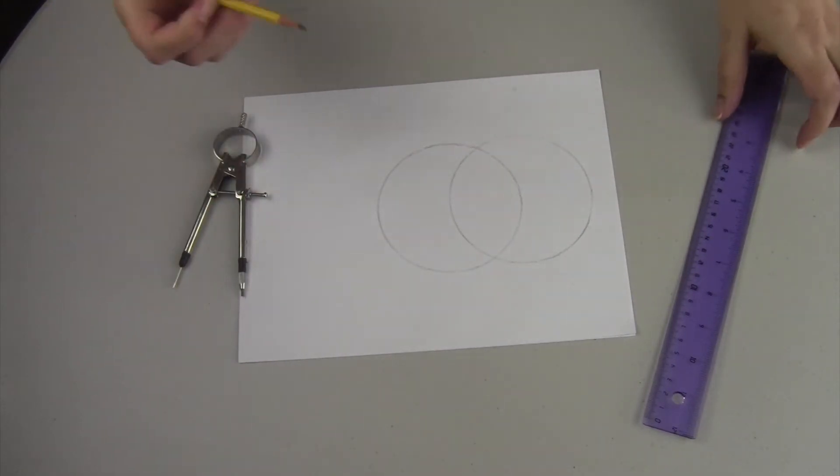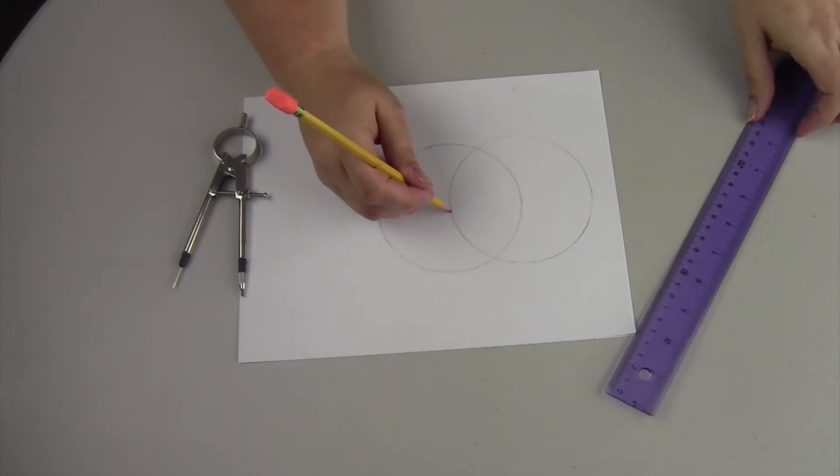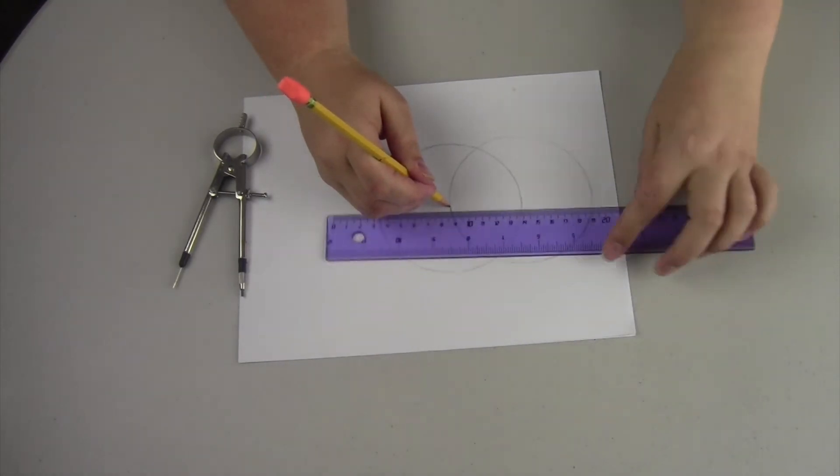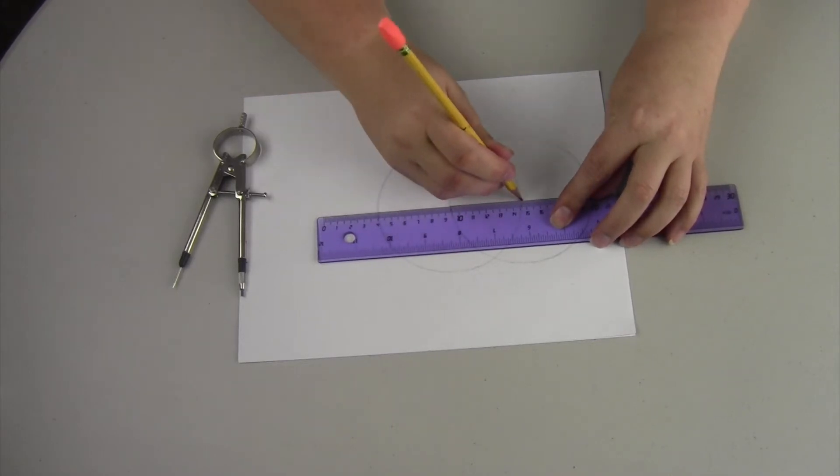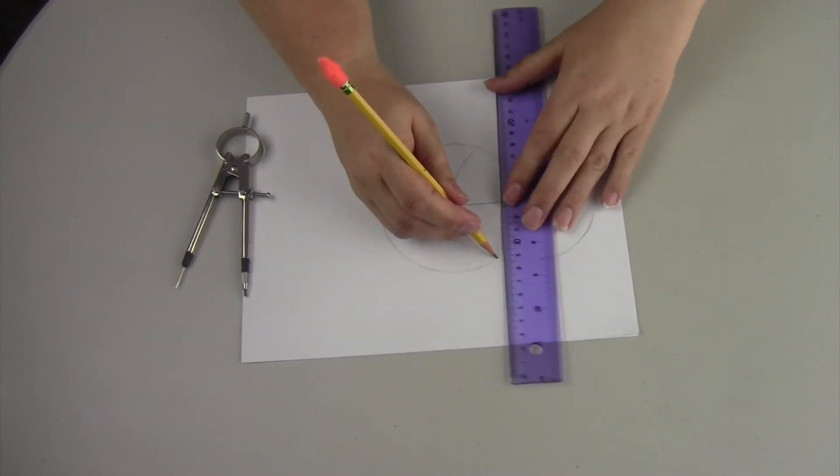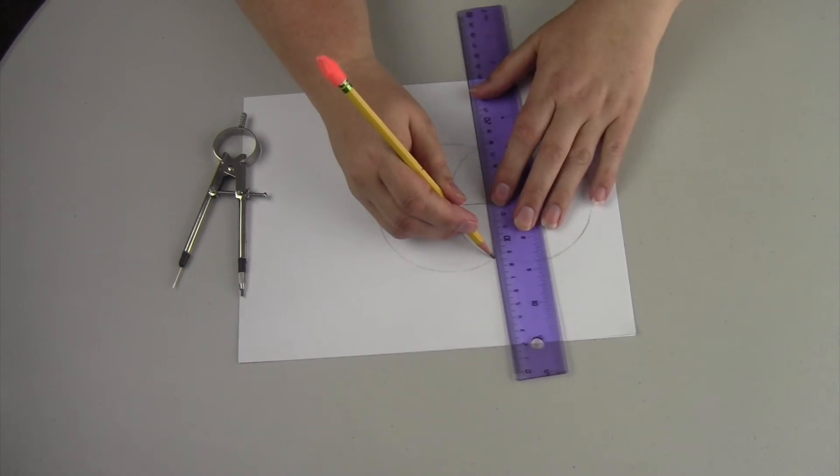And now we're going to draw a line for the radius and a line straight down connecting the Vesica Pisces from the top to the bottom.